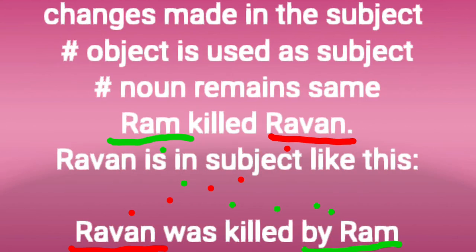Changes made in the subject: when the object is used as the subject it remains the same if it is a noun. For example, 'Ram killed Ravan' — Ram and Ravan remain the same, there is no change in form, only a position change.